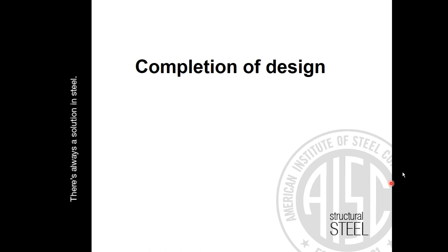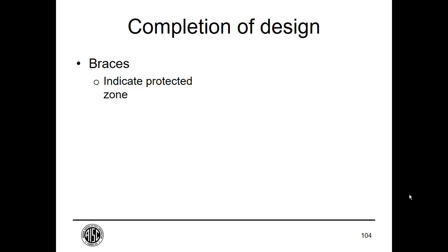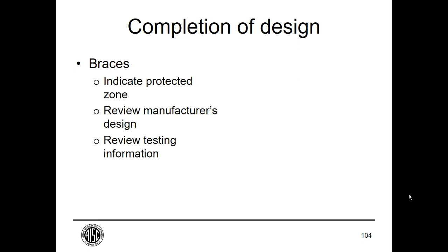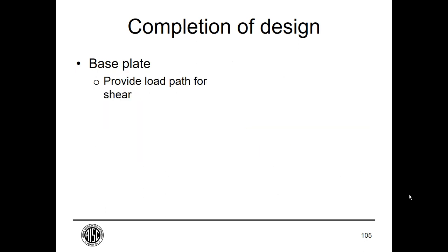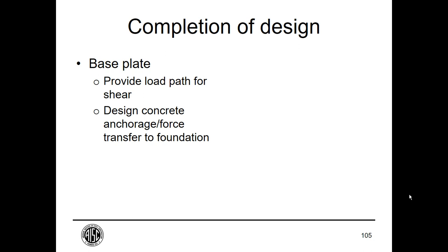For course completion truth from the presenter — what haven't we designed? We haven't indicated the protected zone, haven't reviewed a manufacturer's submittal or their testing information. For connections, we need to indicate the demand critical welds. For the beam, we haven't designed the lateral bracing. For the column, we haven't designed the column splice. At the base plate, we need to provide a complete load path for the shear, design the concrete anchorage, and design force transfer to the foundation. If we're relying on the grade beam for rotation capacity, we would detail that essentially as a special moment frame to provide that rotation capacity. For the specifications, we need to specify weld toughness for typical and demand critical welds, and the quality assurance plan needs to be fleshed out.